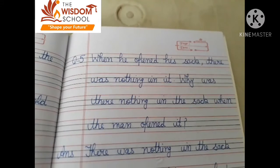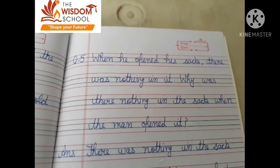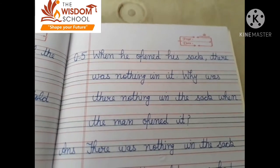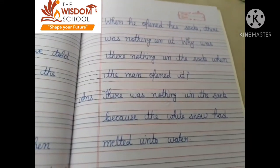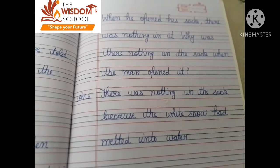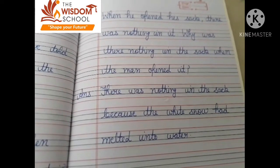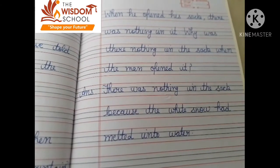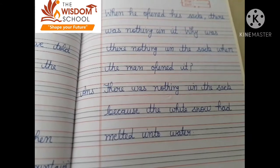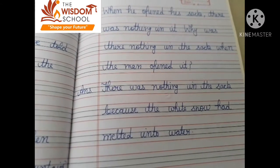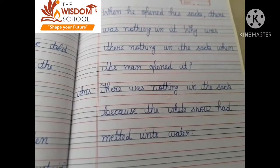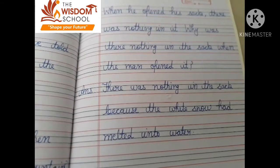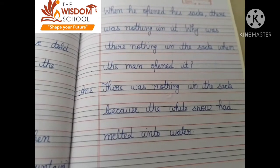The man found a thick layer of white snow. Usko white snow ki thick layer mili. When he opened his sack, there was nothing in it. Why was there nothing in the sack when the man opened it? Jab man ne sack ko open kiya, to usme kuch kyun nahi tha? There was nothing in the sack because the white snow had melted into water. White snow melt hokar water ban gayi thi, isliye usme kuch nahi mila.